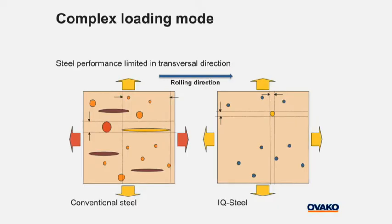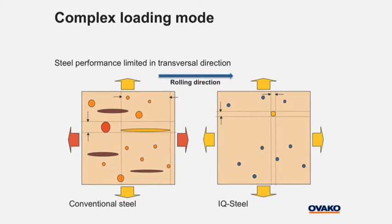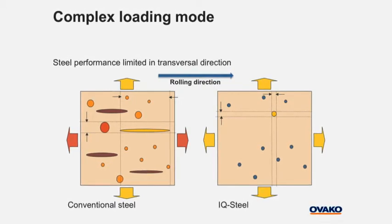The IQ steel is designed to have small and isolated inclusions. The small size makes them less harmful for fatigue. Since they are isolated, they should not interact and act as one large stringer. The result is that IQ steel would have much less difference in fatigue properties between the most and least favorable loading direction.